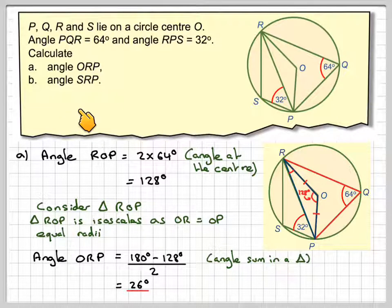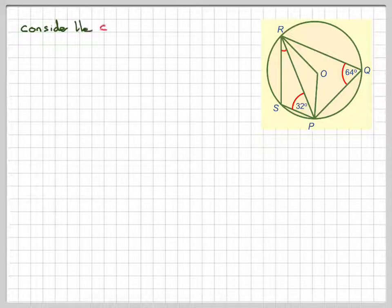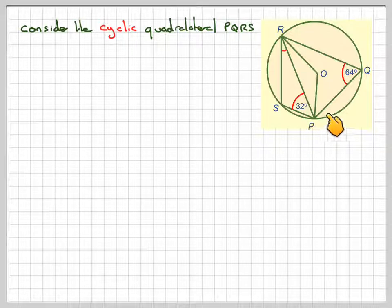In part B, we need to find angle SRP. So consider the cyclic quadrilateral. What do we mean by cyclic quadrilateral? That means all four vertices of the quadrilateral touch the edge of the circle. So that's that one there in red.